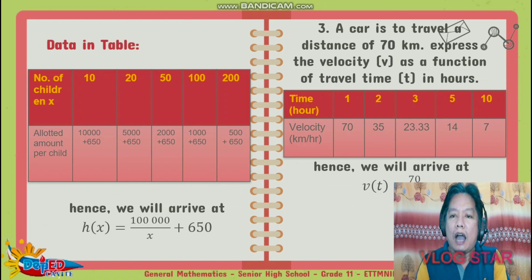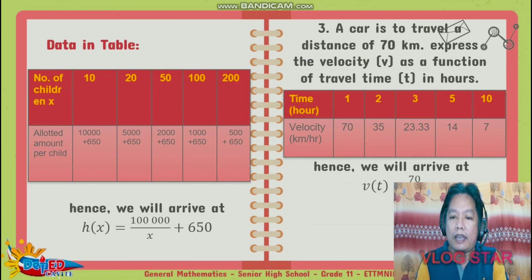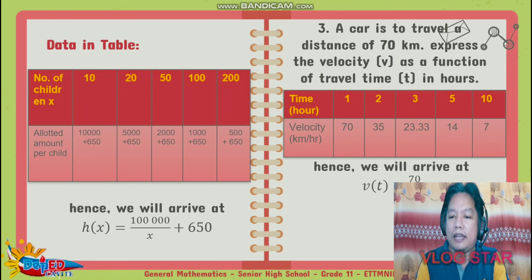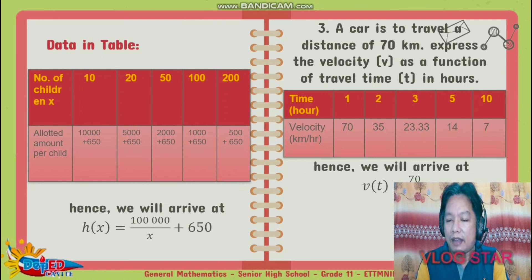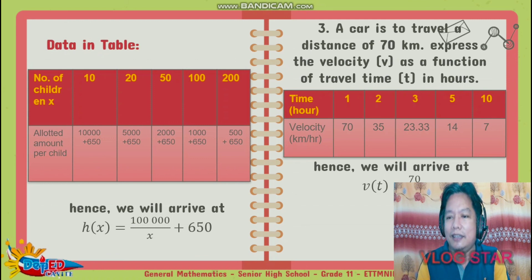Number 3: a car is to travel a distance of 70 kilometers. Express the velocity as a function of travel time in hours. From the table: 1 hour → 70 km/h; 2 hours → 35 km/h; 3 hours → 23.33 km/h; 5 hours → 14 km/h; 10 hours → 7 km/h. That is based on a distance of 70 kilometers. Hence, V of T equals 70 over T. Depending on the time, the velocity is derived — if time is 5 hours, velocity is 14 km/h; if time is 10 hours, velocity is 7 km/h.